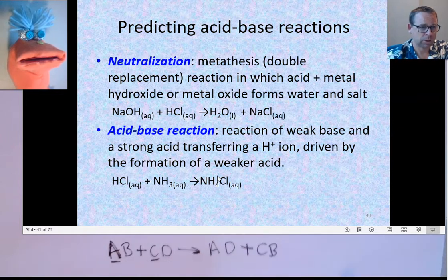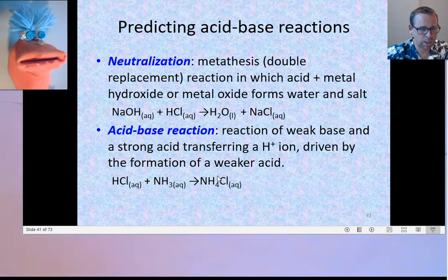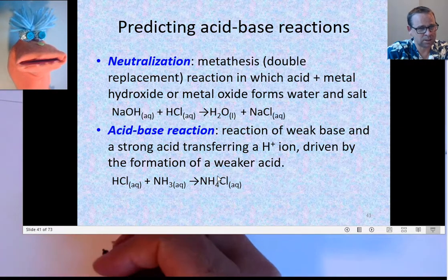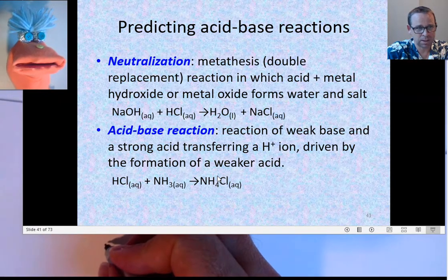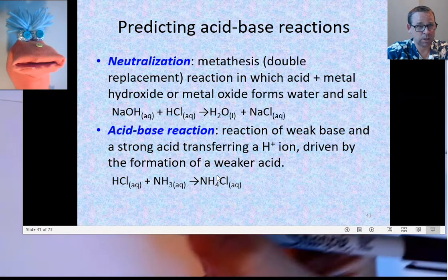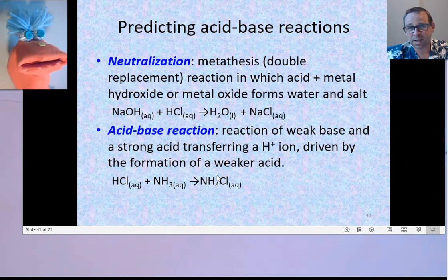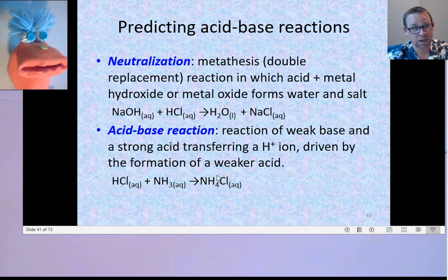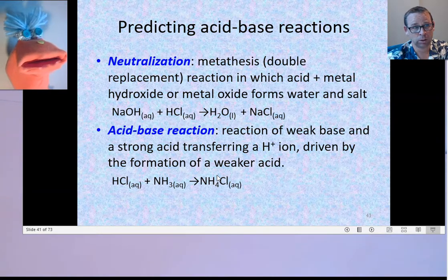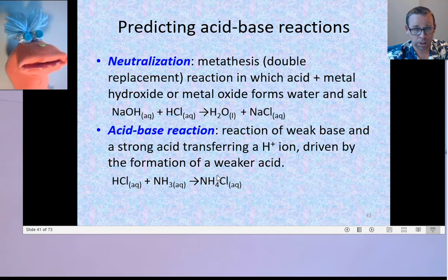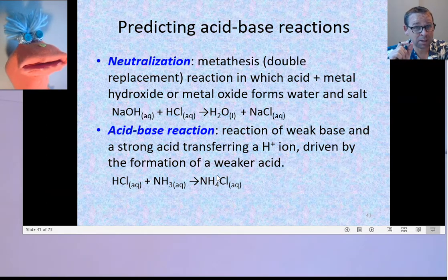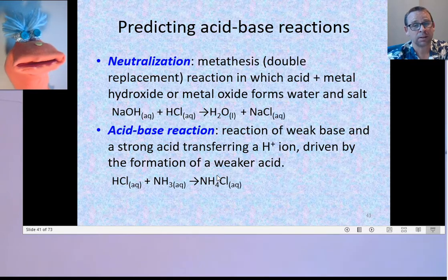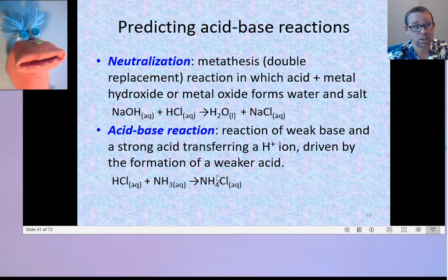So if we look at the net ionic equation for this HCl combined with NH3, first, let's draw the ionic equation. We would take anything that's ionic and separate it into its ions. Is HCl ionic? Well, it's an acid. So, on acids, we'll write them as separate ions only if they're strong acids. Is HCl a strong acid?